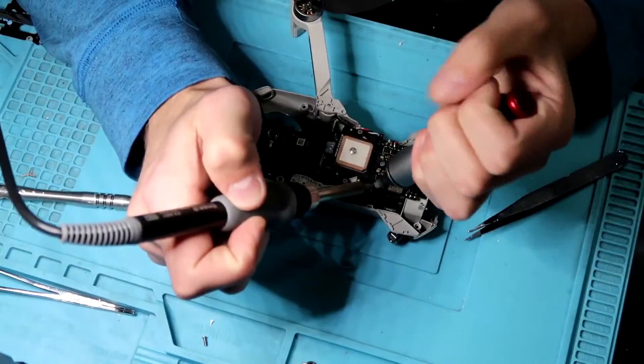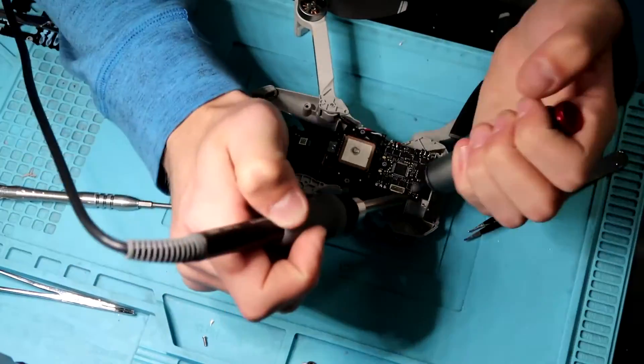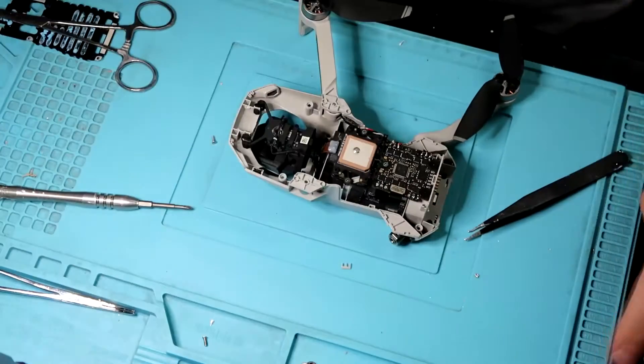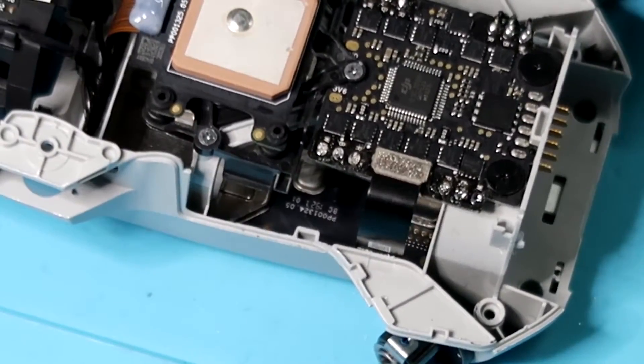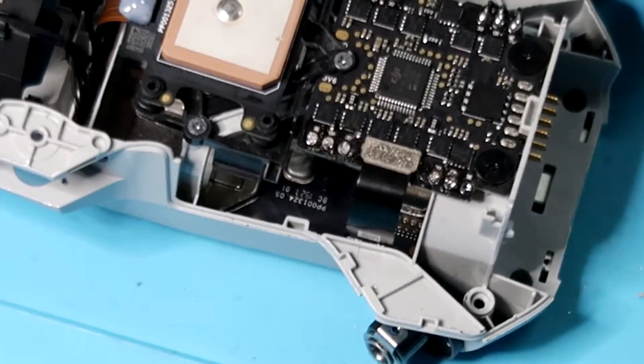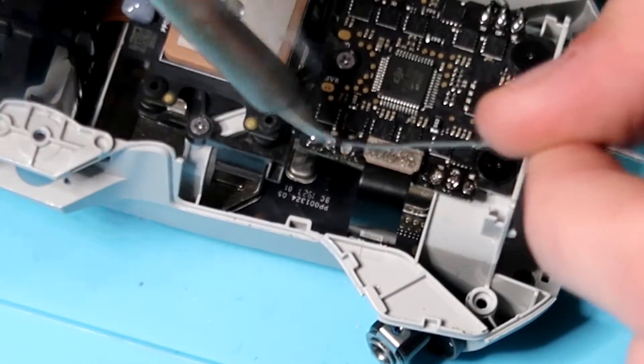So this is a step I really recommend everyone start doing if you're not. And this is just cleaning the solder off the pads and adding fresh solder. What this is going to do is just ensure a solid connection and make sure there's fresh flux on the pads so you have an easy time re-soldering the wires.